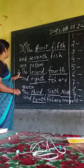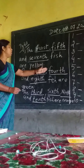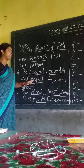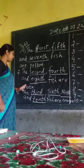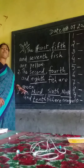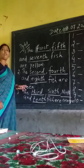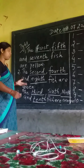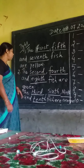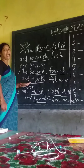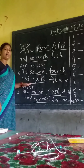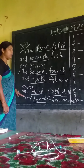Second question: the second, fourth, and eighth fish are green. So which fish are green? You can say: the second, fourth, and eighth fish are green.